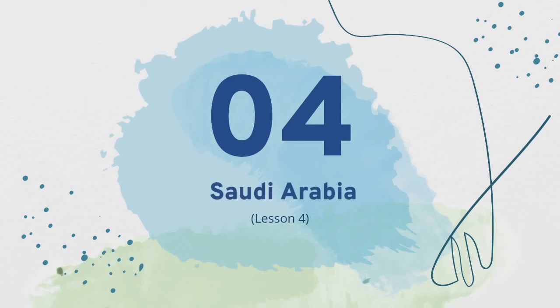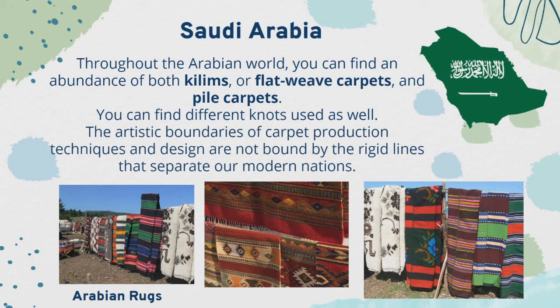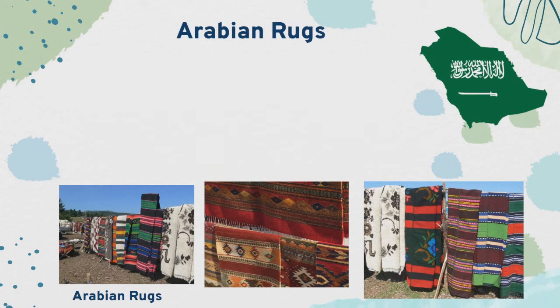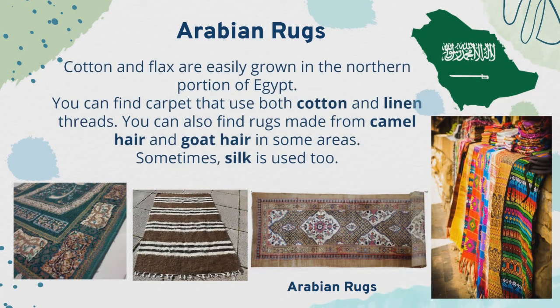Lesson 4: Saudi Arabia. Throughout the Arabian world, you can find an abundance of both kilims — or flat-weave carpets — and pile carpets. You can find different knots used as well. The artistic boundaries of carpet production techniques and design are not bound by the rigid lines that separate our modern nations. Arabian carpets are primarily made from wool, but one finds a broader variety of materials in the area compared to other regions of the world. Cotton and flax are easily grown in the northern portion of Egypt, and you can find carpets that use both cotton and linen threads. You can also find rugs made from camel hair and goat hair in some areas. Sometimes, silk is used too.